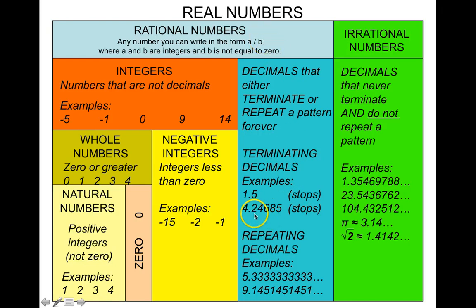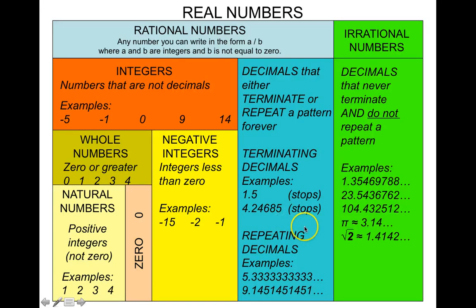Sometimes a decimal may go on for a while — like 4.24685 — and then it stops. That's also a terminating decimal. Some decimals never stop but repeat a pattern, and if this happens, it's also considered a rational number.